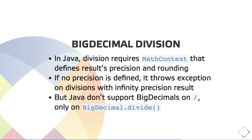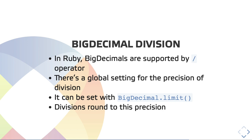In Java, BigDecimal doesn't support arithmetic operators directly — you need to call BigDecimal.divide to use division. In Ruby, BigDecimals are supported for the division operator, but there is a global setting that sets the division precision. You can set this manually using BigDecimal.limit, and the division is going to round to that precision.